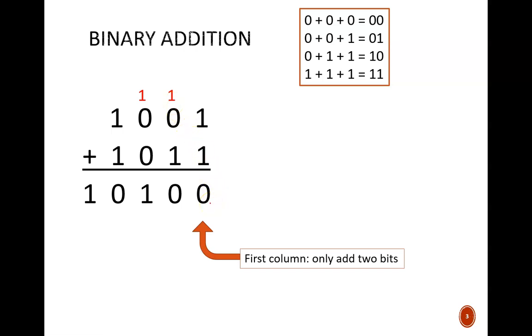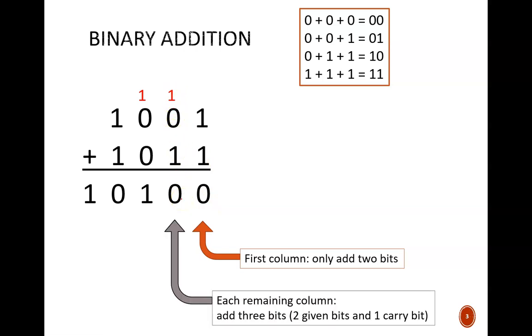Now in the second column, we add 1 plus 0 plus 1, which equals 10. Again, the 1 carries to the next column, and the 0 comes down as part of the final sum. We repeat this process for the remaining two columns. In unsigned binary, the carry out from the final column is part of the final sum. So with two 4-bit inputs, we get a 5-bit sum.